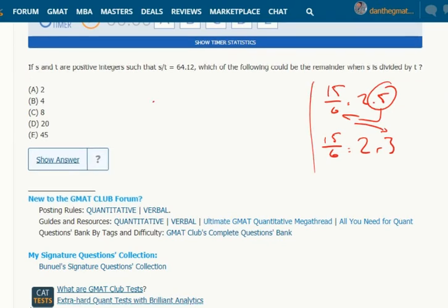So what we could write here is 0.12 T equals the remainder. I don't know what the remainder is, I'm just going to write that.